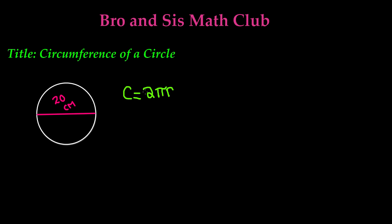So you're multiplying 2 times the value of pi times r, or the radius. The radius is half of the diameter, and as you can see in our circle here, this is our diameter — it's cutting halfway through the circle and it could be from any direction. In this case, the diameter is equal to 20 centimeters.